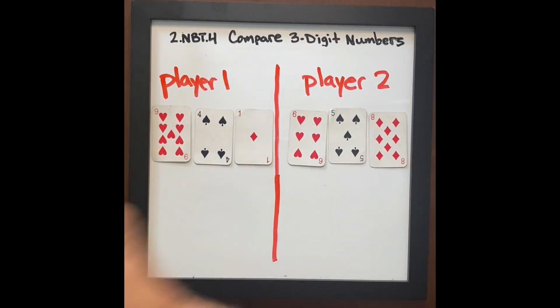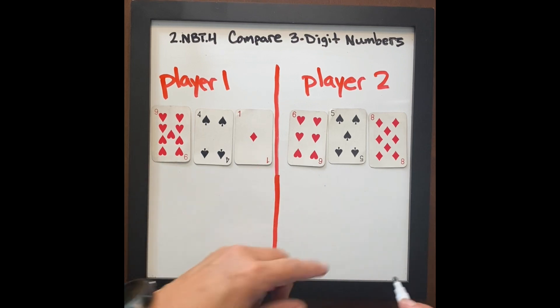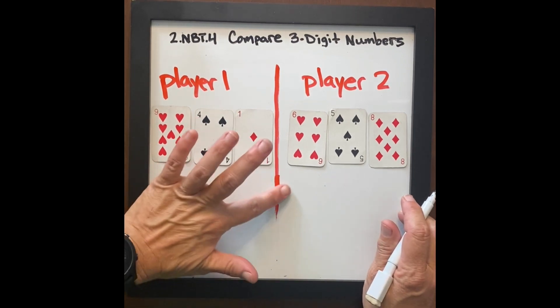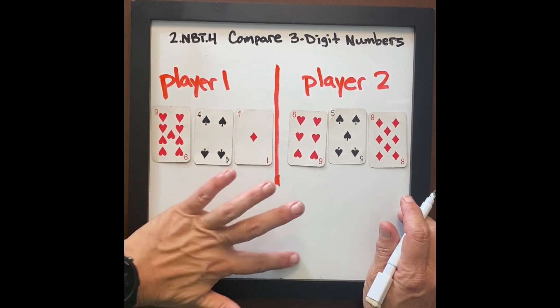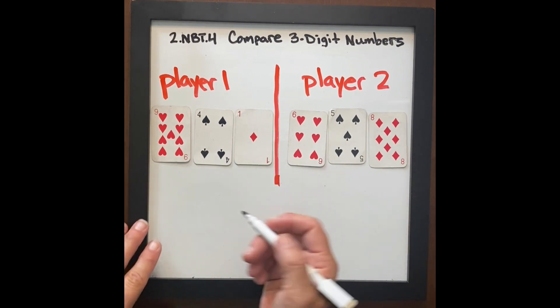Now instead of player one saying I won, I get the cards, we want player one and player two to write this so that they're continuing to understand their symbols.